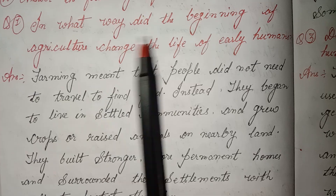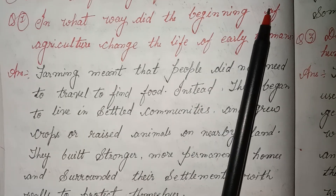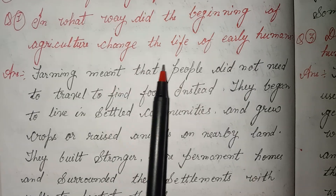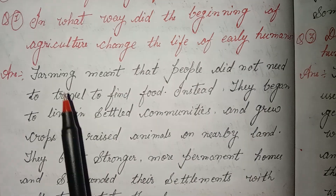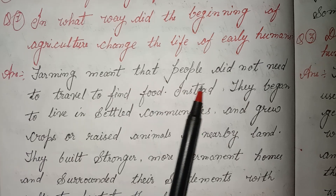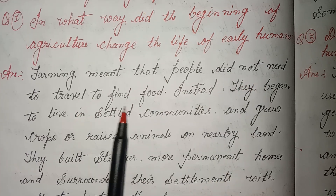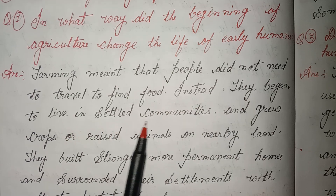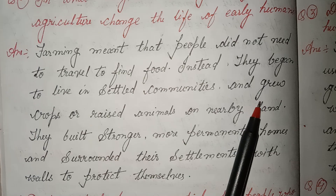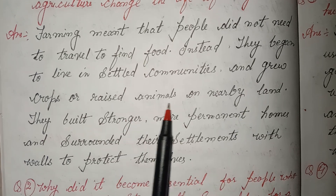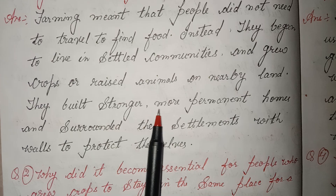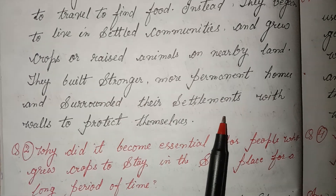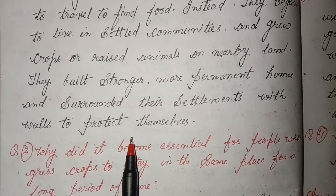Answer the following questions in 50 to 70 words. First: In what way did the beginning of agriculture change the life of early humans? Answer: Farming meant that people did not need to travel to find food. Instead, they began to live in settled communities and grew crops or raised animals on nearby land. They built stronger, more permanent homes and surrounded their settlements with walls to protect themselves.